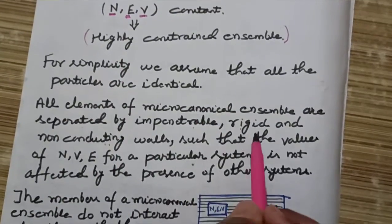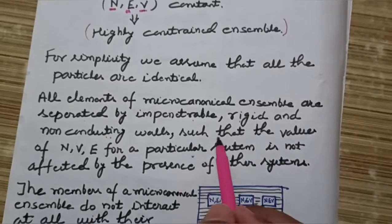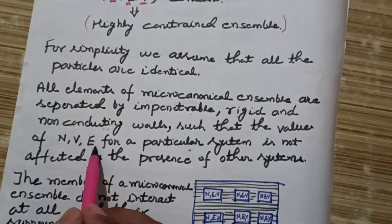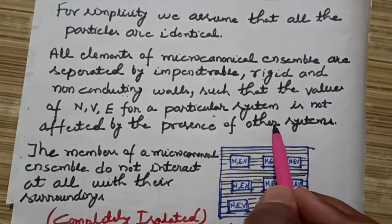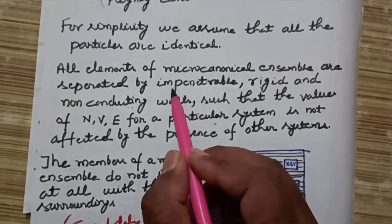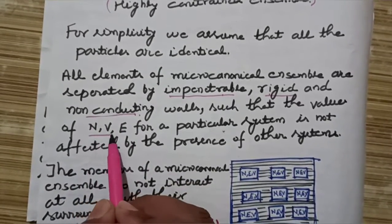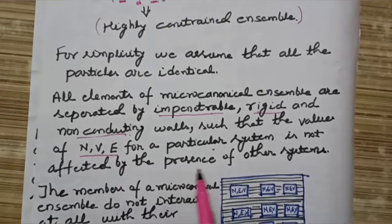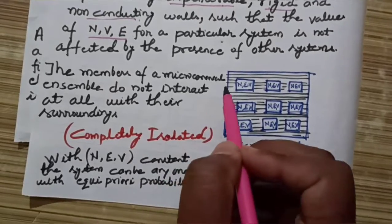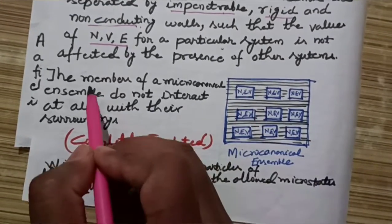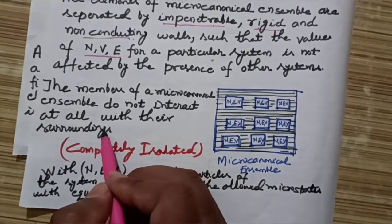Rigid walls mean the volume is kept constant, so the number of particles is not affected. Non-conducting walls keep the value of E constant. This ensures that the values of N, V, and E for a particular system are not affected by the presence of other systems. Therefore, members of the micro canonical ensemble do not interact at all with their surroundings.